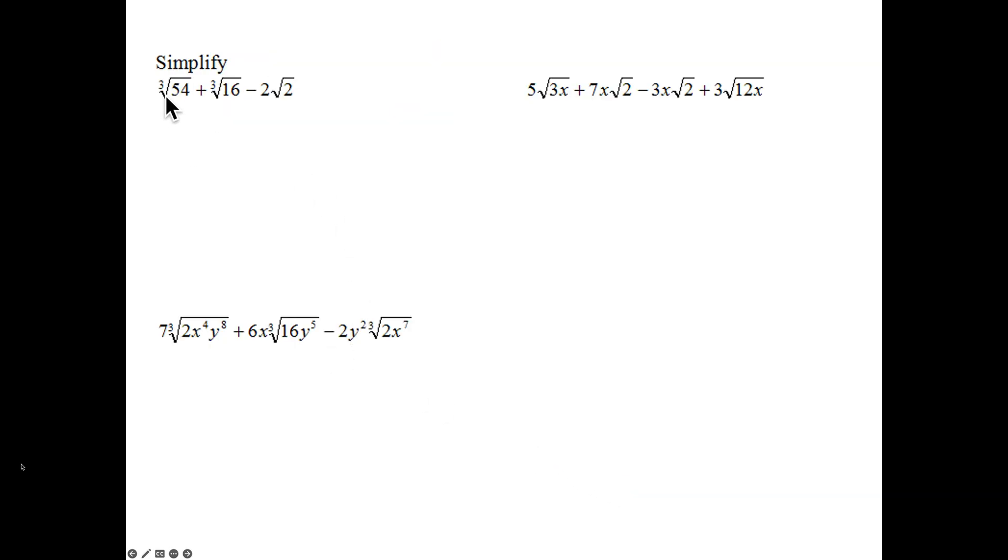Alright, more examples. Cube root, cube root, and here we have a square root. So just by identifying your roots first, no one's going to be able to combine with this one. So we want to break these down. So 54 is the 27 times 2. And we've seen that 27 is 3 to the third, so we're going to simplify out the 3. The cube root of 3 cubed will be 3 cube root of 2. My 16 is going to be 8 times 2. 8 is 2 to the third, so that we're going to simplify out.